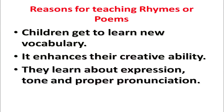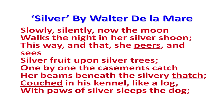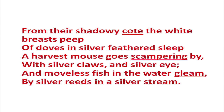When we recite a poem like that, we get to know a lot of things about the poem. Children get to learn new vocabulary. The poem 'Silver' is fit for classes three and above. We learn a few words which are not very familiar for class three children. For example, 'peers' means looking intently, observing. 'Thatch' means sloping. 'Couched' means snuggled. 'Coat' refers to a small rectangular box-like structure made for pigeons to stay in. 'Scampering' means running haphazardly. 'Gleam' means shine. So they learn a lot of new words and their word bank gets enhanced.